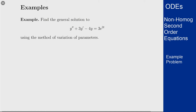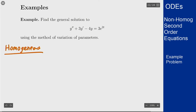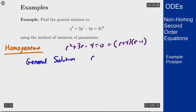We start by solving the homogeneous problem. The characteristic polynomial is r squared plus 3r minus 4 equals 0, which factors as (r plus 4)(r minus 1). So we have a general solution c1 e to the minus 4t plus c2 e to the t.